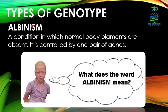Here we discuss genotype under the example of albinism. What does the word albinism mean? Albinism is a Latin word which means pale, yellow, or white. A condition in which normal body pigments are absent is called albinism. It is controlled by one pair of genes.